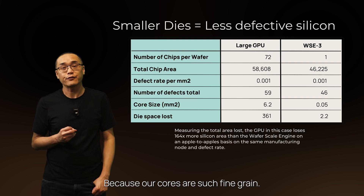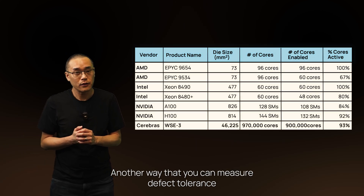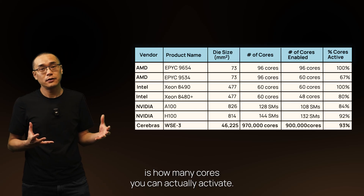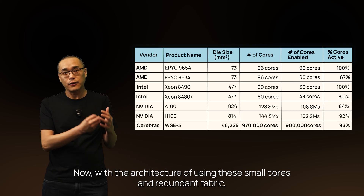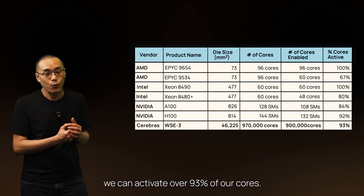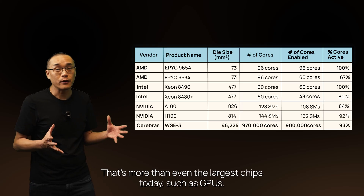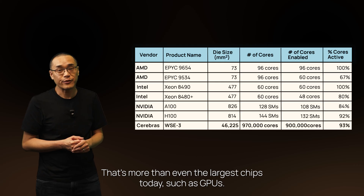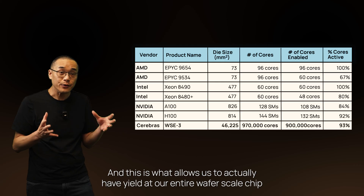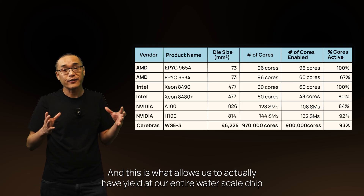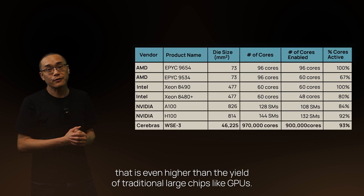Another way you can measure defect tolerance is how many cores you can actually activate. With the architecture of using these small cores and redundant fabric, we can activate over 93% of our cores. In fact, that's more than even the largest chips today, such as GPUs. This is what allows us to actually have yield at our entire wafer-scale chip that is even higher than the yield of traditional large chips like GPUs.